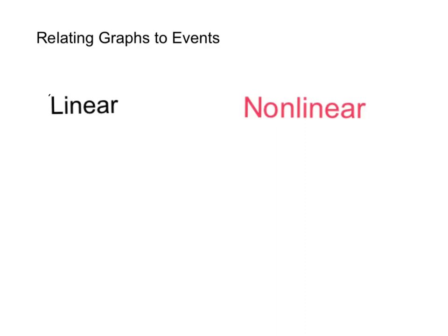In this video, we're going to take a look at how we relate graphs to events. So the first thing we need to understand, at least from a sense of vocabulary, is there are two types of graphs.